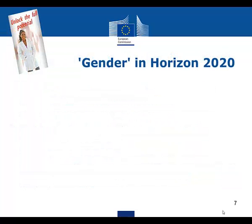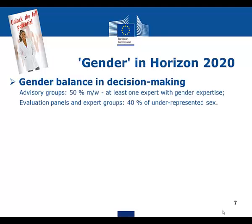Gender is an important policy dimension that goes much beyond Horizon 2020 at European level. The external advisory groups for Horizon 2020 are now bound to a strict gender balance. Furthermore, each advisory group should have at least one expert with gender expertise. The composition of evaluation panels and expert groups should not go below the limit of 40% of the underrepresented sex.